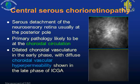With the use of indocyanine green angiography and enhanced depth imaging OCT, we now know that the primary pathology in CSC is likely to be in the choroidal circulation. In the late phase of the ICG angiography, you can see dilated choroidal vasculature in the early phase, with the late phase showing diffuse choroidal vascular hyperpermeability, as shown here.